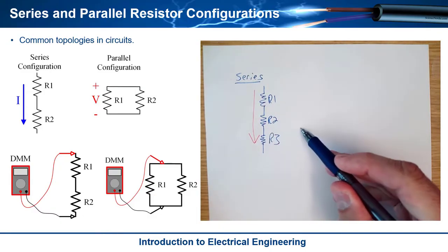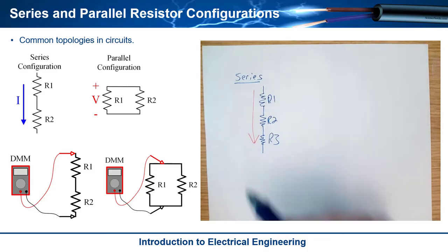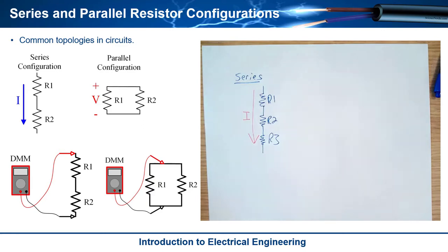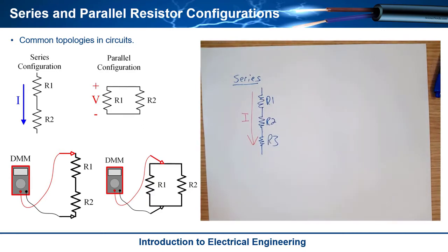There's not like a path here where the current could split and go somewhere else. These all have the same current that flows through them. So we always know that when we have something in series, it's got the same current for all the components through it. And that's really nice.